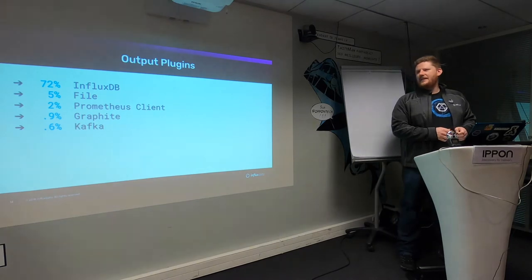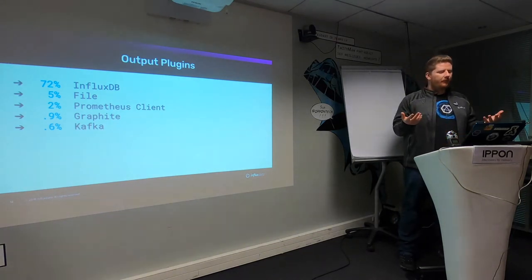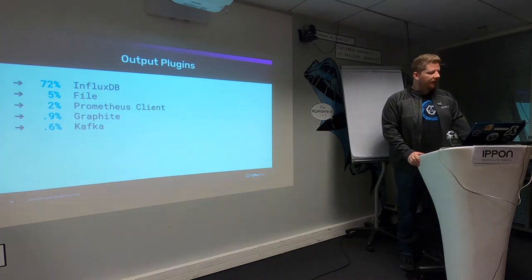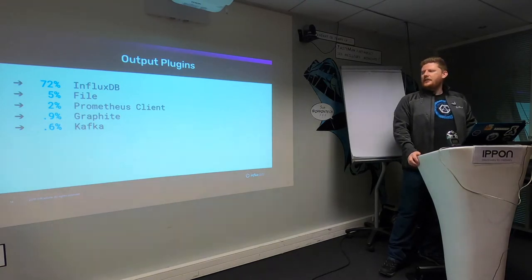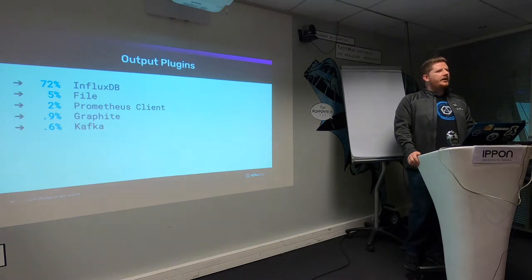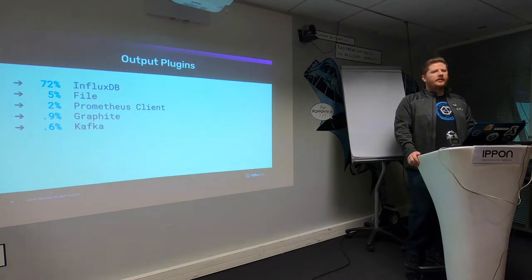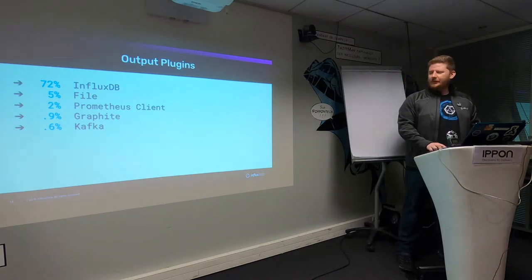First, no surprise: 72% of people using Telegraph are writing to InfluxDB. 5% were writing to a file — there are actually quite a few interesting use cases for that. 2% are using the Prometheus integration; I was hoping that would be higher. And only 0.6% were using Kafka, which I found really strange, because whenever I go to a conference I can't go more than 10 minutes without someone saying Kafka. So people just aren't using Kafka with Telegraph.